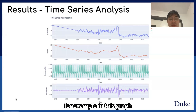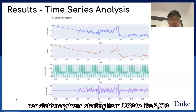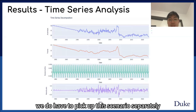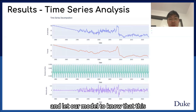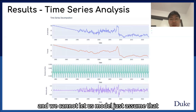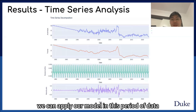For example, in this graph, it shows a non-stationary trend starting from 1980 to around 2010. So for this region and from 1980 to 2010, we have to pick up this scenario separately and let our model know that this period of time is not stationary. We cannot let our model just assume that it can apply generally over this period of data.